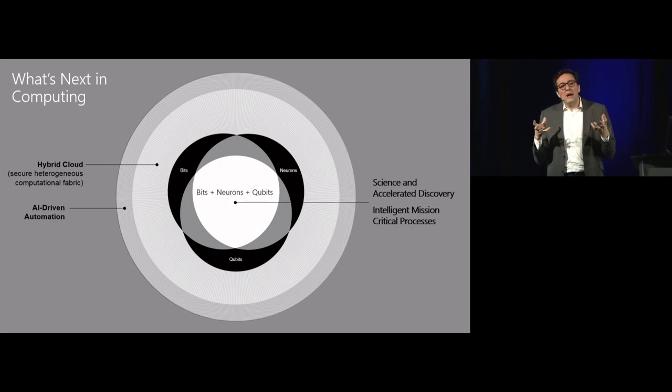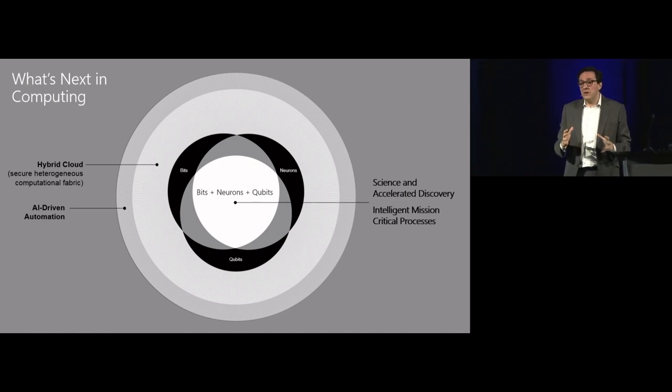I want to close by now bringing these ideas together. I've made the argument that the story of the future of computing is not just more and cheaper bits, but that information representation in terms of neural architectures and quantum-based information processing, coupled with a new generation of hardware and devices, is going to unleash a tremendous potential. These bits plus neurons and qubits of underlying fabric are going to have to be orchestrated by a secure heterogeneous computational fabric of the hybrid cloud.